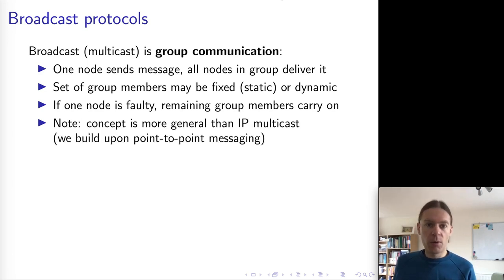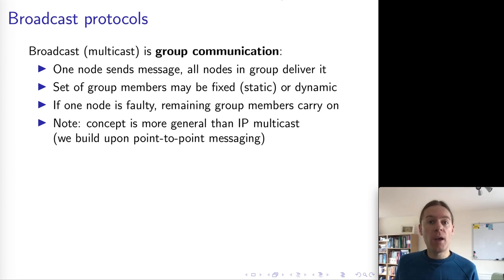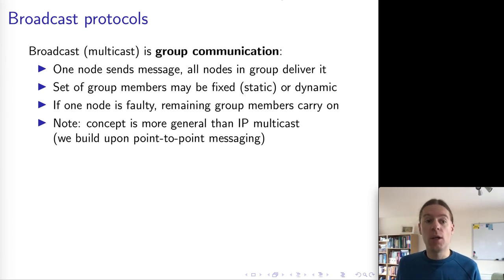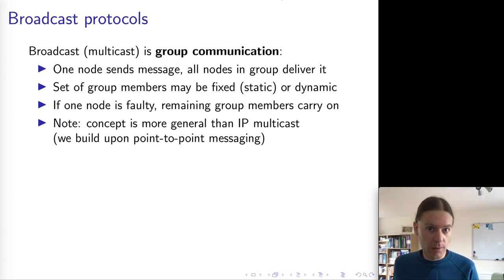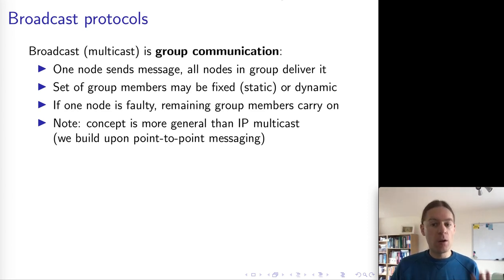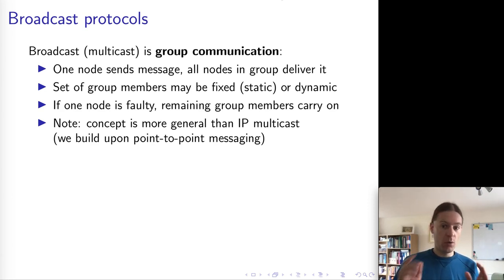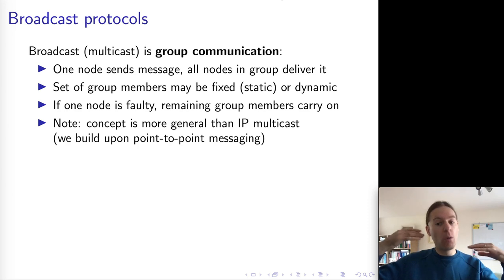There are a couple of different implementations of broadcast or multicast. One that you might have come across in the context of computer networking is that some local area networks support broadcast or multicast at the hardware level. This is quite useful on local area networks, but generally that kind of multicast does not work over the public internet. So what we will consider in this course is a more general form of multicast or broadcast, where we assume that the underlying network only provides point-to-point messaging, as in unicast.